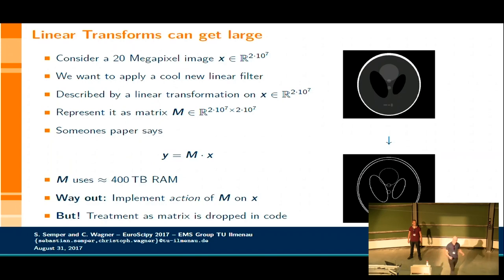So we could write down a rectangle of numbers and do a matrix vector multiplication to apply our linear filter to, for example, a scan of my brain. Then, we get out Y, and this is maybe this result. The problem is that for a 20-megapixel image, this matrix would use 400 terabytes of RAM.